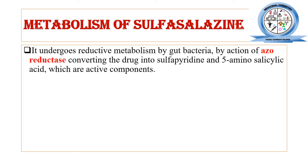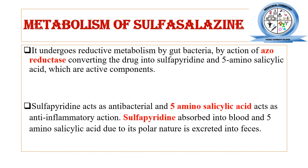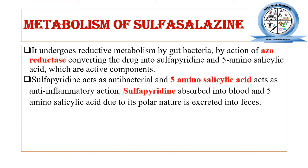Now let's discuss the metabolism of sulfasalazine. We have already discussed that it is a product of sulfapyridine and its chemical structure contains an azo bond. Whenever nitrogen atoms are present in these chemical structures, the drug undergoes a reduction type of metabolic reaction. Sulfasalazine undergoes reduction by the help of the azoreductase enzyme and is converted into two active drugs: sulfapyridine and 5-aminosalicylic acid.